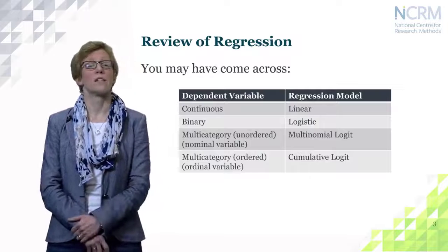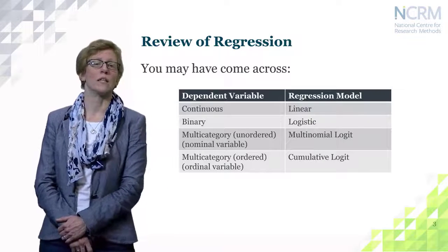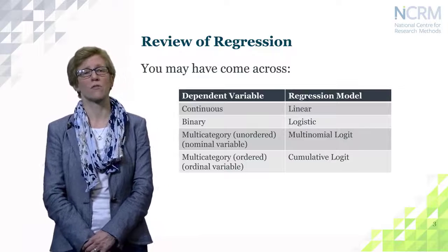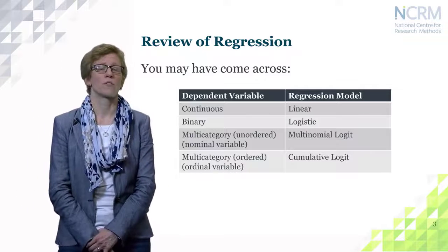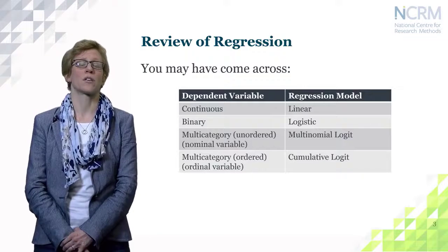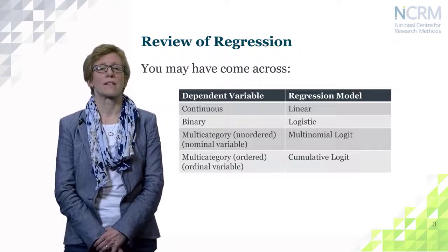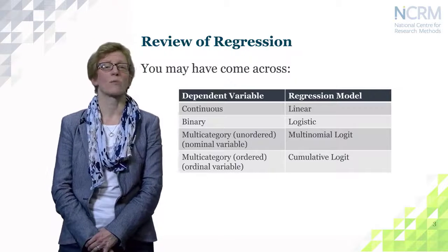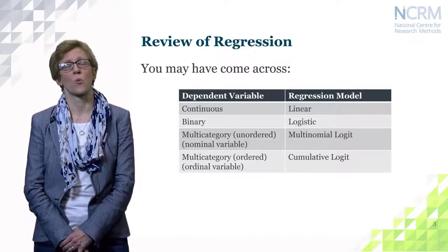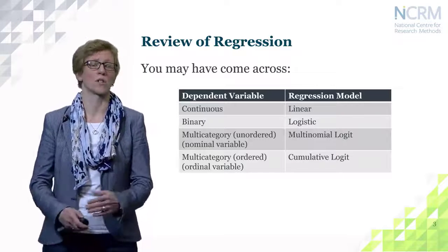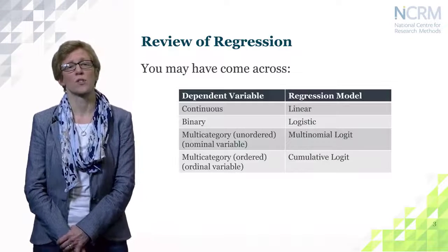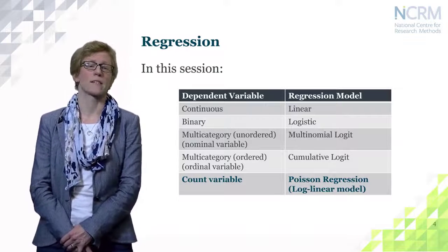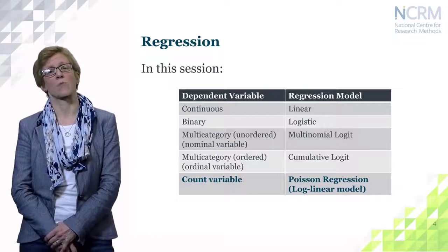You may have come across different types of regression models already — for example, a linear regression model for a continuous dependent variable, or logistic regression models for a binary outcome variable. There are obviously other types of regression as well that are part of the generalised linear models, such as the multinomial logit model for a multi-category unordered variable. Here we are going to go a step further and look at an outcome variable that is a count variable using Poisson regression. In the literature you may also find the expression log-linear model.